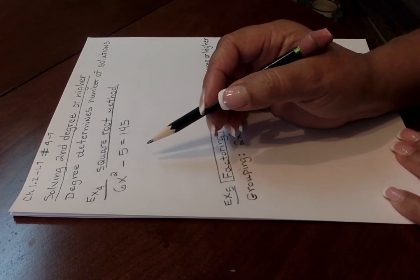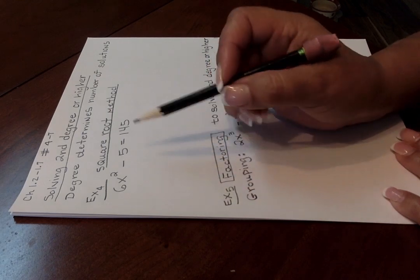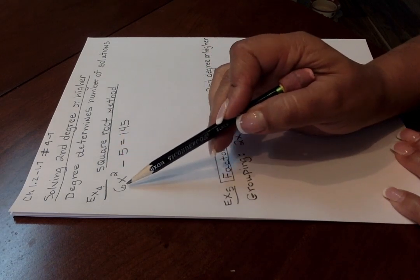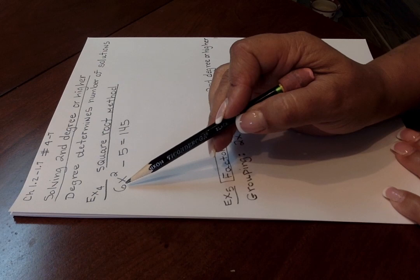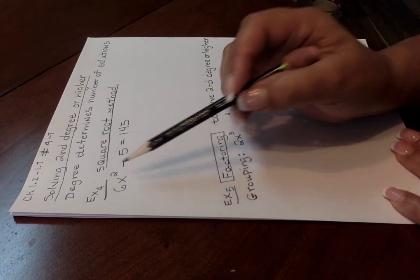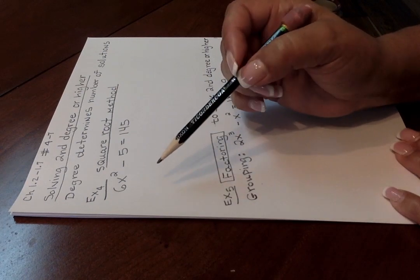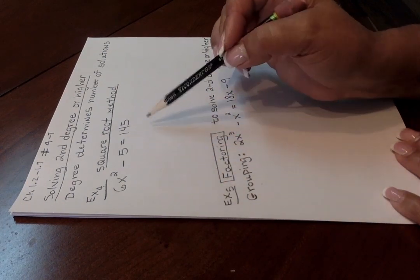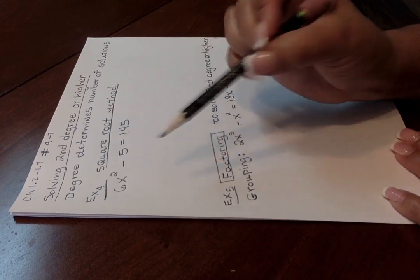So what you can do when that's happening is use the square root method by isolating the square term, which means we're going to have to get rid of this negative 5, get it on the other side, as well as the 6. You want to get the square term isolated before you actually take the square root of both sides, which is the main step for the square root method.